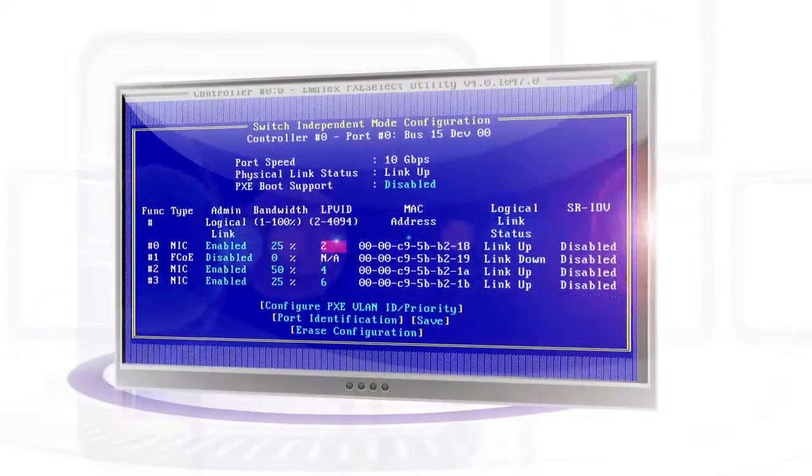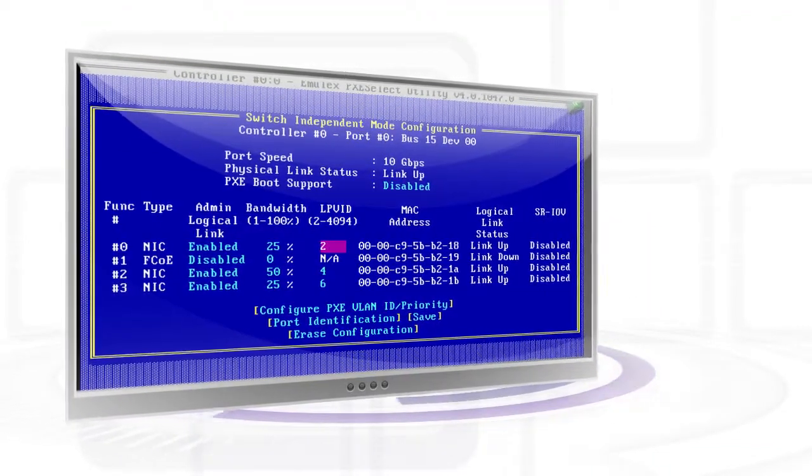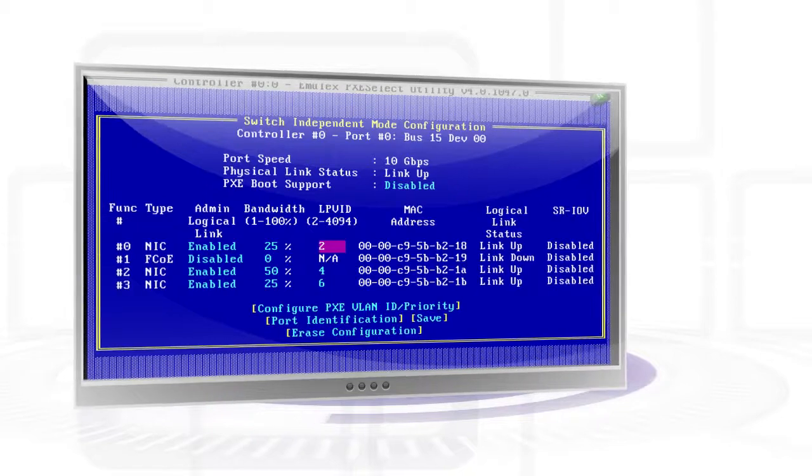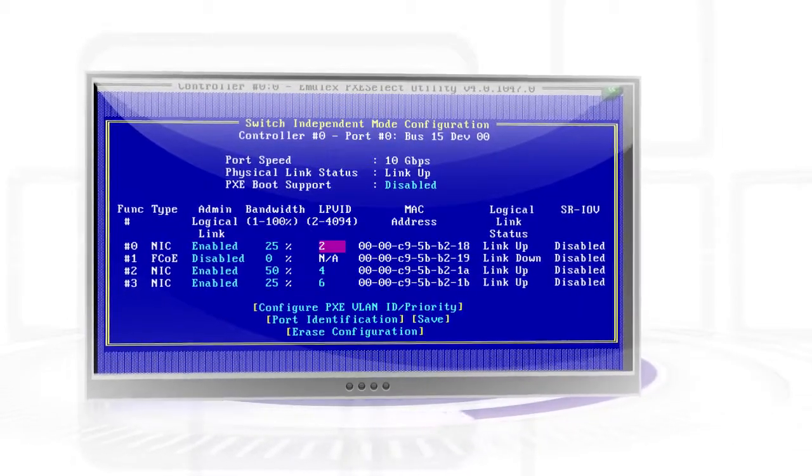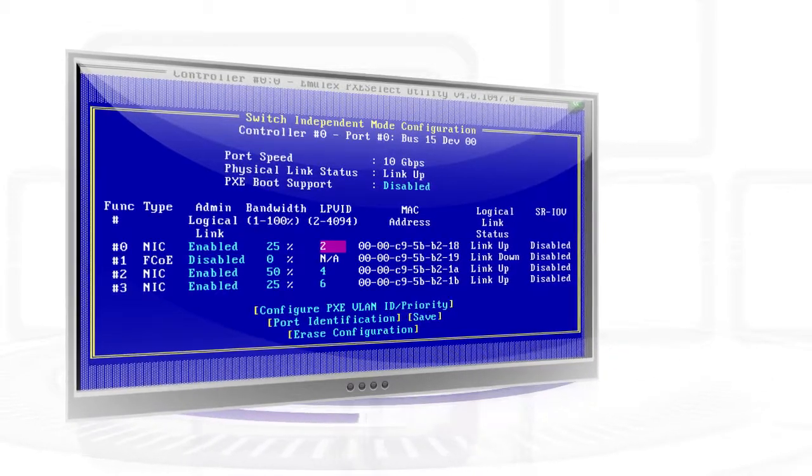As can be seen in the snapshot, one of the methods to configure UMC is from the BIOS utility. The picture shows UMC channels on port 0 of the controller. It has three network channels and one FCOE channel.